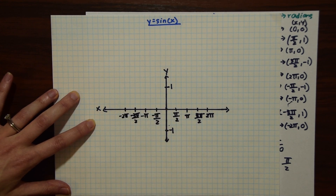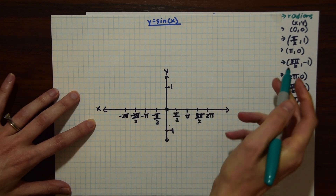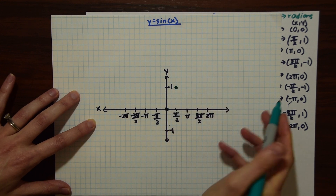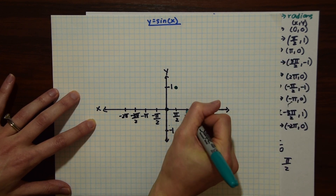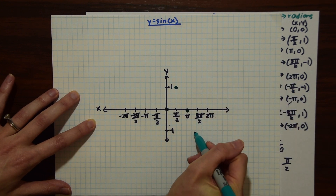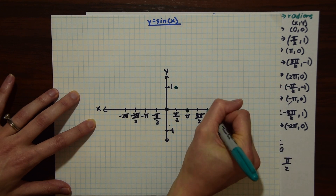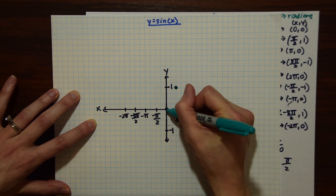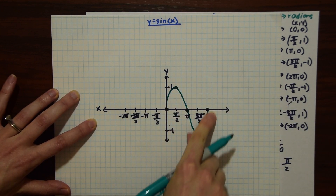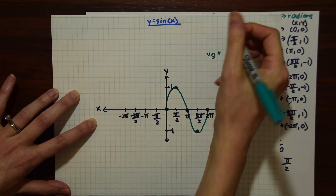So now we can start graphing, looking at our coordinates. Our first one is (0, 0). Next we have (pi/2, 1) — which is up here. Then (pi, 0) — back down on the x-axis. Then (3pi/2, -1). And then (2pi, 0). Let's connect our points. Notice it forms this S shape, which is easy to remember because S is for sine.